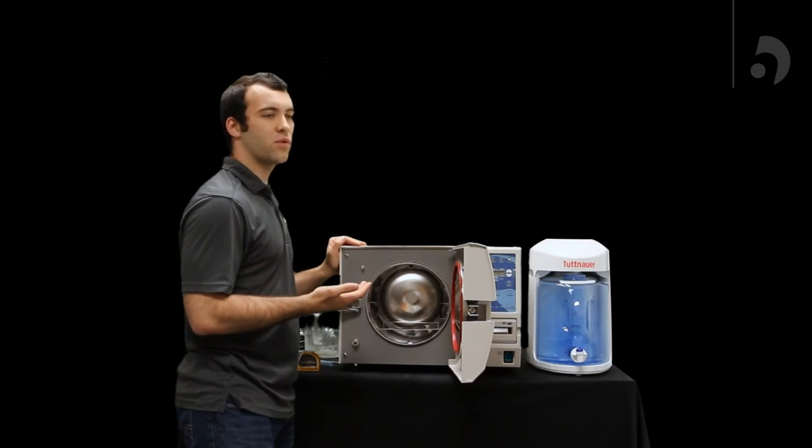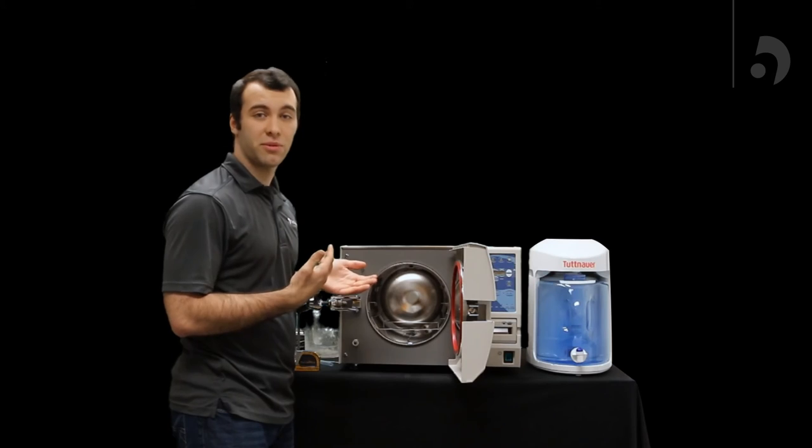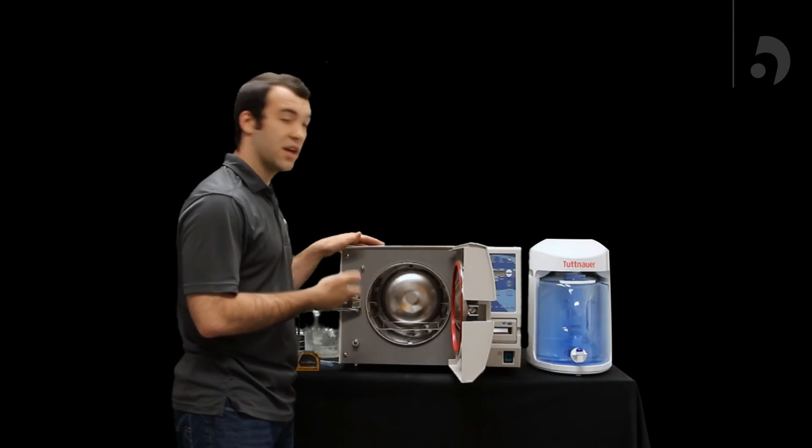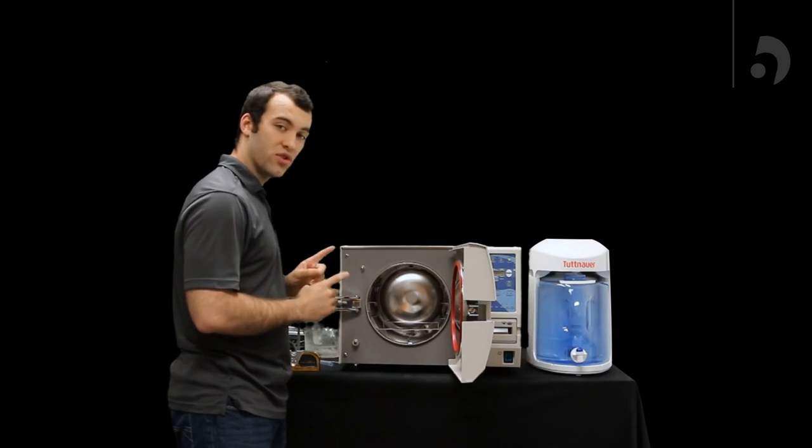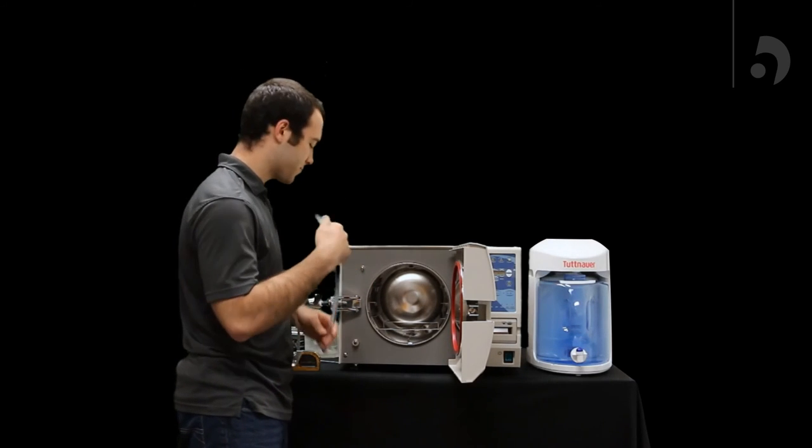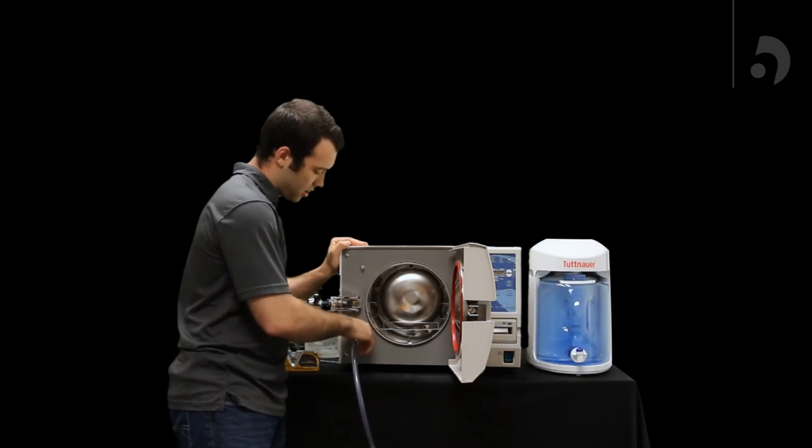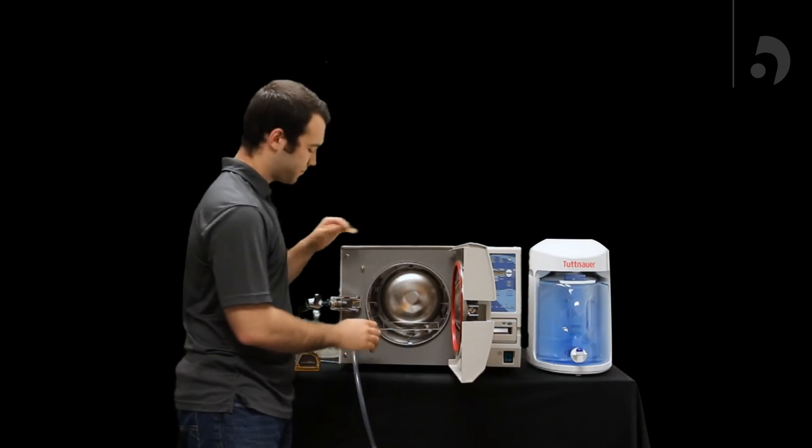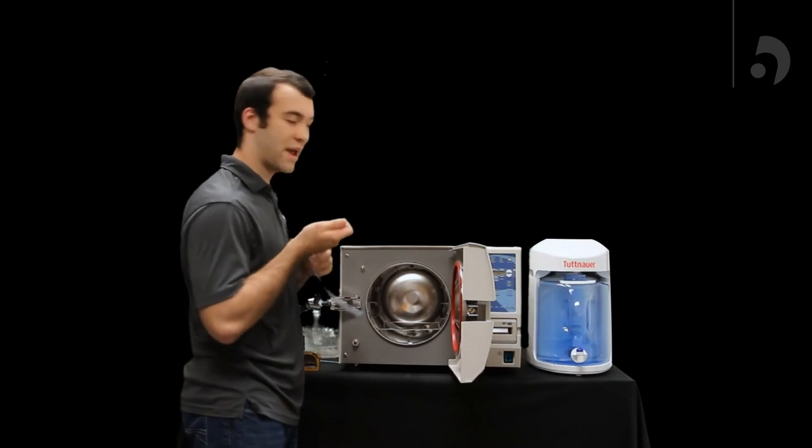Now, another thing with the water in the reservoir is that after about a month, maybe faster depending on how frequently you use your unit, it can start to get dirty and we recommend draining it within that time. So to drain that water, you use the tube that comes with your unit, slide it on this drain right here, twist it counterclockwise, and the water will start coming out. From there, you can just fill your reservoir back up.